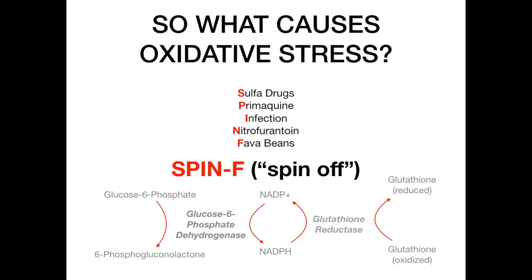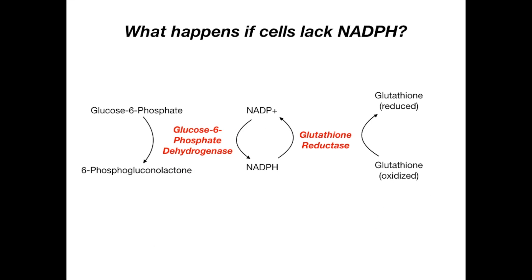These are the things that cause oxidative stress, and this is significant because certain people who lack a key enzyme will be unable to handle the additional oxidative stress these agents cause, resulting in really severe anemia. What happens if cells lack NADPH? One major cause is if you knock out glucose-6-phosphate dehydrogenase. Those with a G6PD deficiency cannot generate NADPH from NADP+, so glutathione reductase can't make reduced glutathione, leading to oxidative damage from free radicals.